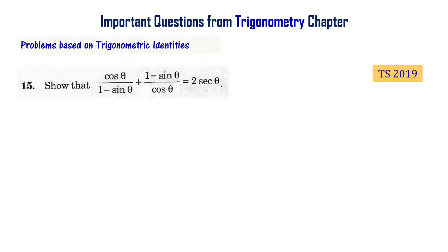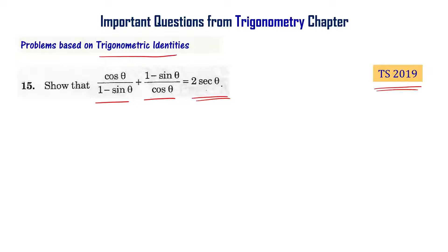Show that cosθ divided by (1 − sinθ) plus (1 − sinθ) divided by cosθ equals 2 secθ. This is the Telangana final exam 2019 question. This is a trigonometric identities based problem.